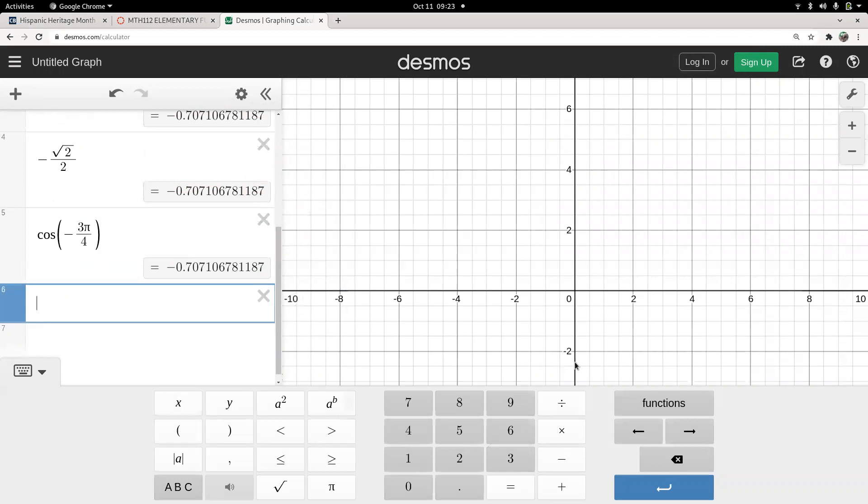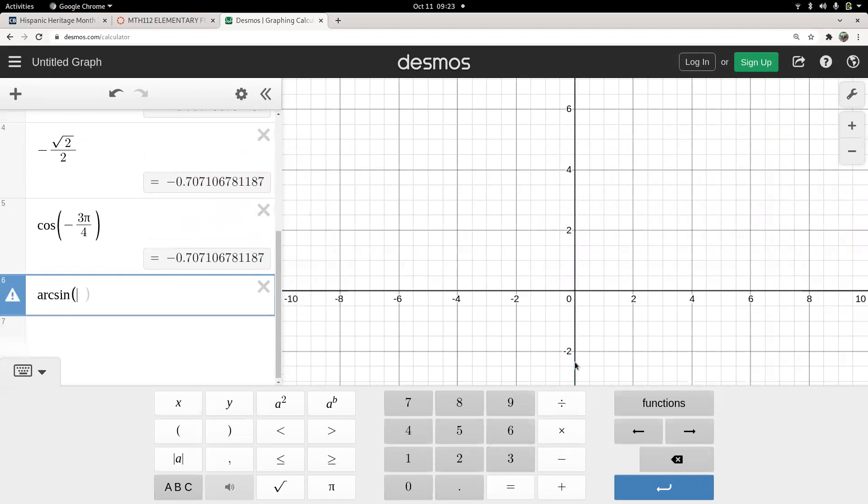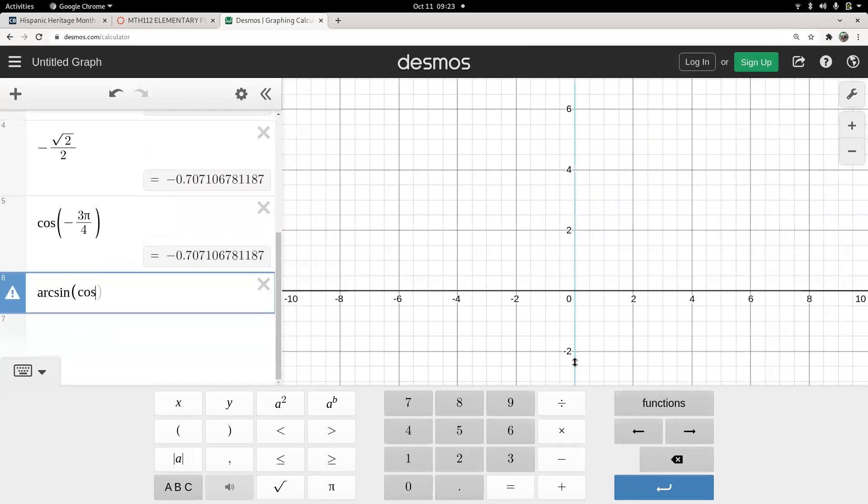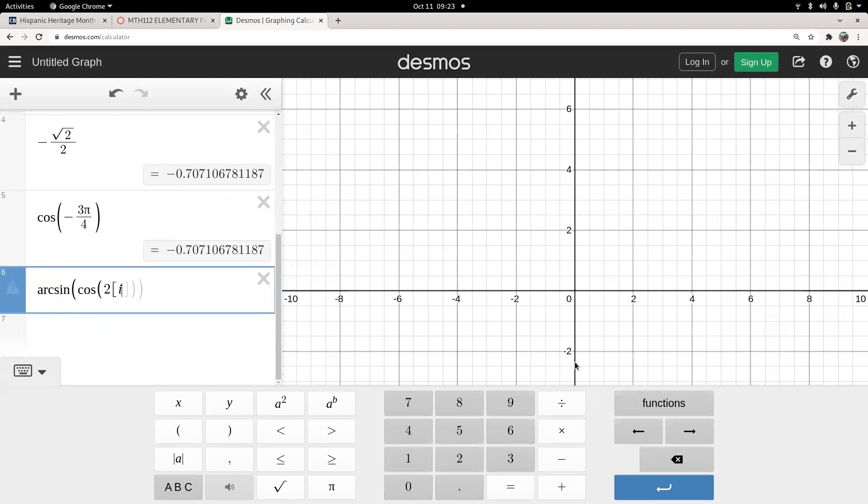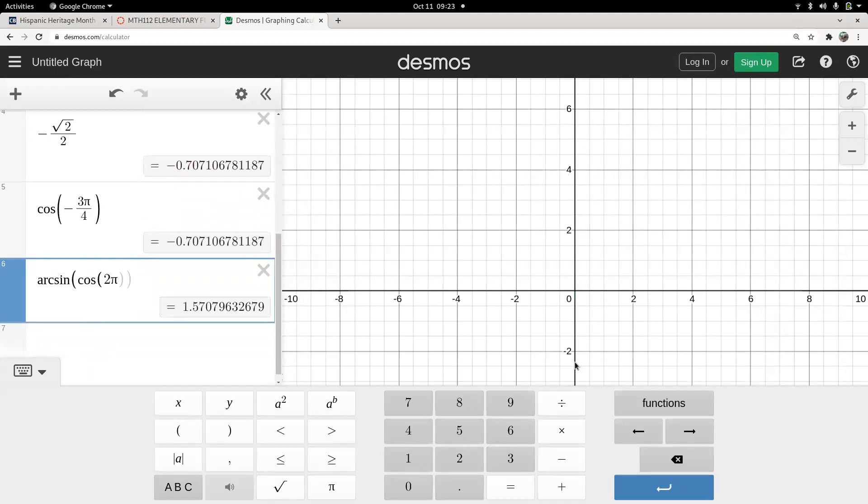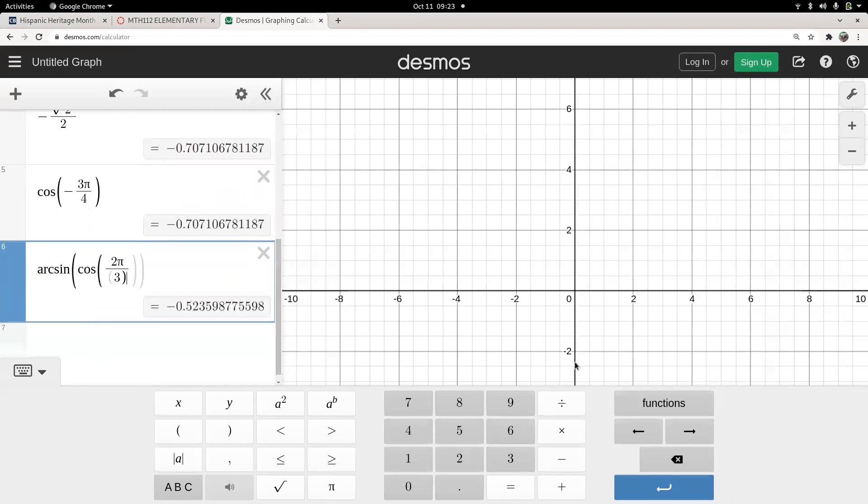So, I can ask the calculator, now I like to type arc sine of the cosine of 2π—oh, π, there we go—number 3, close parenthesis,